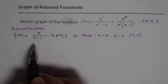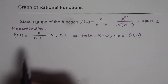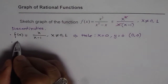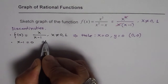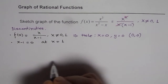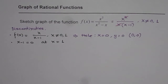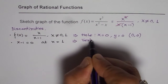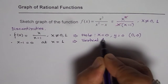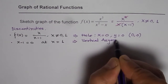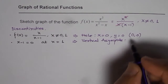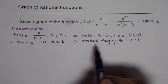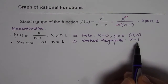The second discontinuity comes from x minus 1 in the denominator. Since x minus 1 equals 0 at x = 1, that gives us a vertical asymptote at x = 1. So we have a hole at the origin and a vertical asymptote at x = 1.